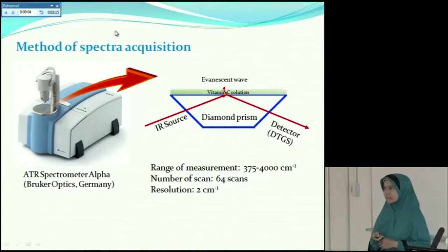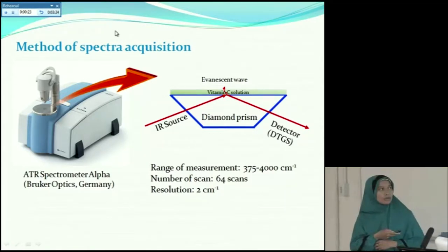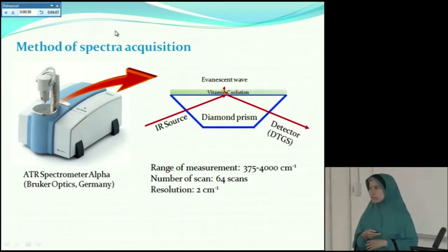Let's move to the method of my experiment. In my experiment, I use this spectrometer from Bruker by using ATR head spectroscopy in mid-infrared region. In this measurement, infrared source comes to the surface of the diamond prism and generates an evanescent wave, and then the absorbance spectra of the sample were recorded by the detector. In the measurement, I use the range between 375 to 4000 per centimeter with 64 number scanning and 2 per centimeter of resolution.